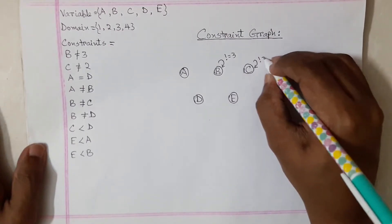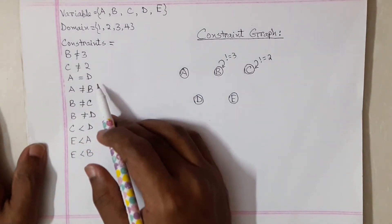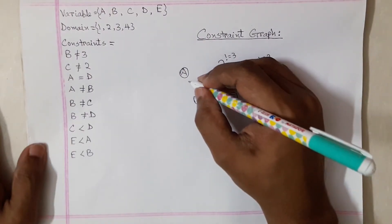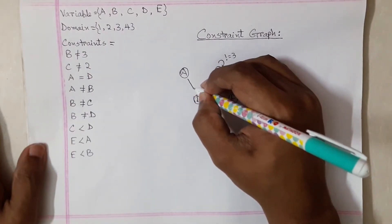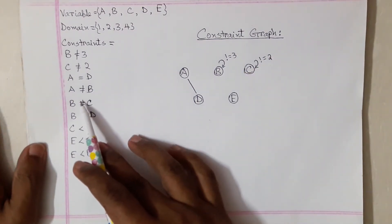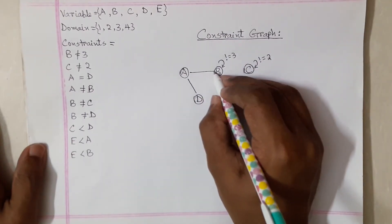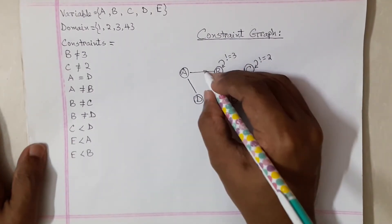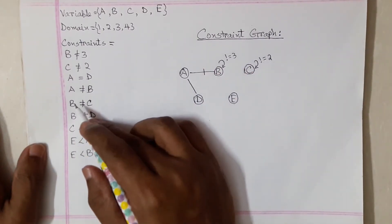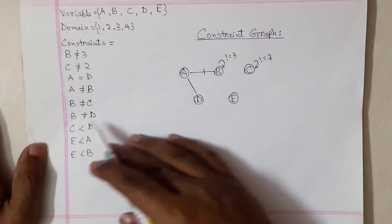The next one is c not equals two, so same thing — you make another self-loop labeled 'not equals two'. Now a equals d, so you simply connect those two nodes with a straight line. For a not equals b, you add a straight line between them with a small tick mark in between to indicate inequality.